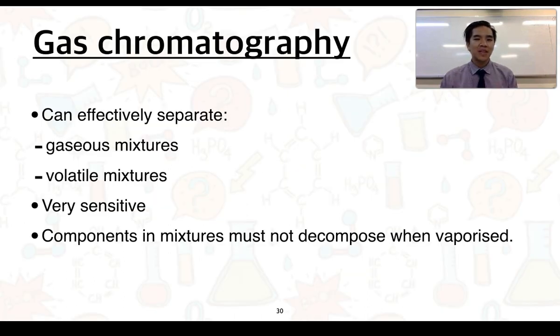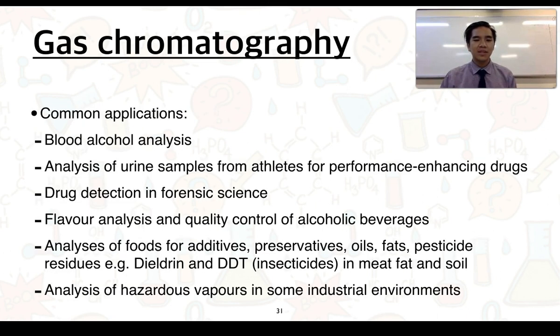The principles of column chromatography are going to look very similar to when we talk about gas chromatography. Gas chromatography can effectively separate gaseous mixtures and volatile mixtures. It is an extremely sensitive technique and can detect very small quantities of different components in mixtures. A key thing is that the components must not decompose when they are heated and vaporized. Some common applications involve blood alcohol analysis, analysis of urine samples from athletes for performance-enhancing drugs, as well as drug detection in forensic science.